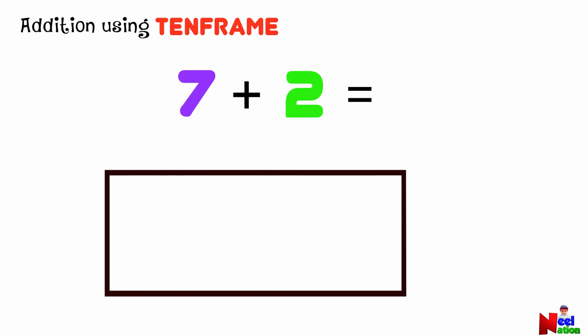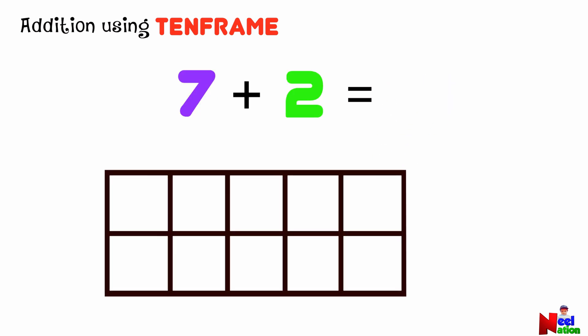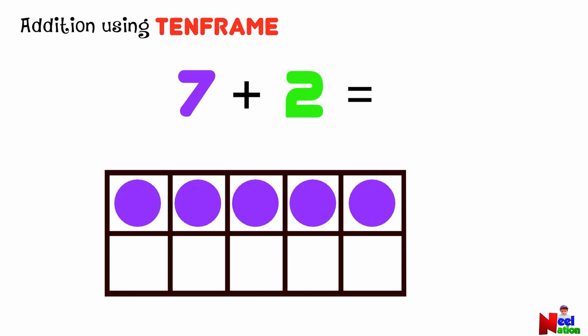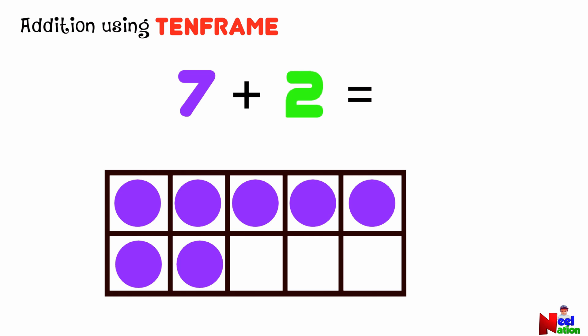Next, what is seven plus two? Let's begin by placing seven counters in the ten frame starting from the first row. Now let's add two more to the ten frame. Let's add all the counters together — there are nine in total. Which means seven plus two is nine.